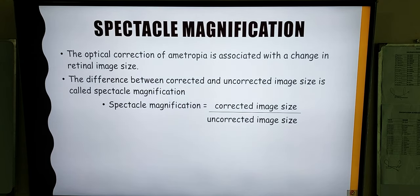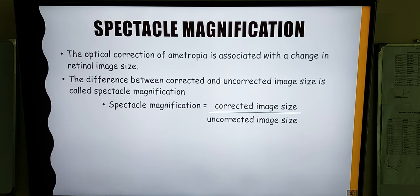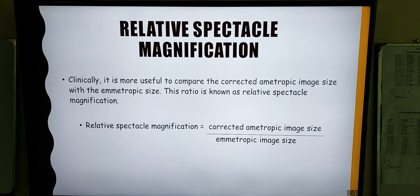Next we move on to spectacle magnification. The optical correction of ametropia is associated with a change in the retinal image size. This is denoted by the spectacle magnification, which is the ratio of the corrected image size to the uncorrected image size. Clinically more important is the relative spectacle magnification, which is the ratio between the corrected ametropic image size and the emmetropic image size of the eye.